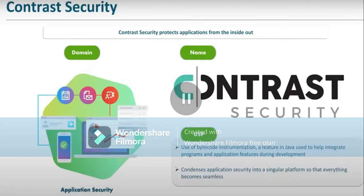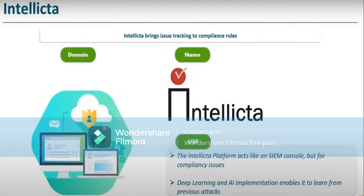That is what Conference Triad actually does. Now, Construct Security protects applications from the inside out. This is more of application security — it is used for bytecode instrumentation, specifically in Java, used to help integrate programs and applications. It also helps you to achieve seamless transactions with your applications.